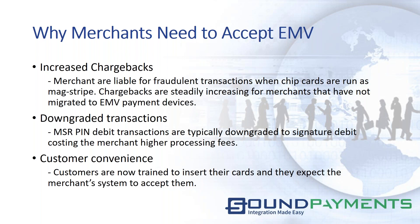The other issue is downgraded transactions, which are hard to see unless you're reading detailed settlement reports. If you run a mag stripe — even if it's a PIN debit — we're seeing those typically downgraded to signature debit even though a PIN is entered, so the merchant ends up paying higher processing fees. The third reason is customer convenience: customers are trained to insert their cards and expect the system to accept it. When it doesn't, it's confusing and awkward.